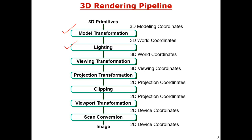After the lighting step, the next transformation is viewing transformation. Based on the intensity or volume of light coming from the object, the viewing transformation determines which portions are going to be visible and which are not. According to that light, the scene is captured by the viewing transformation.